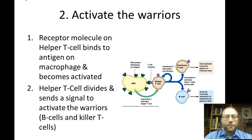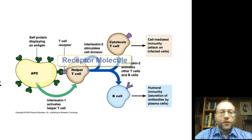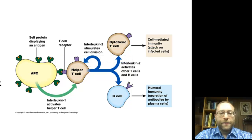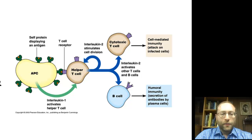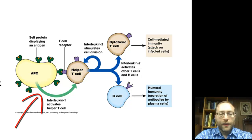Step 2: once the macrophage — called an APC, which stands for antigen-presenting cell — displays the antigen and finds the right cell, here shown as the helper T cell, the helper T cell has the receptor molecule that matches the antigen. They click together, and then the macrophage sends out a chemical that activates the helper T cell.